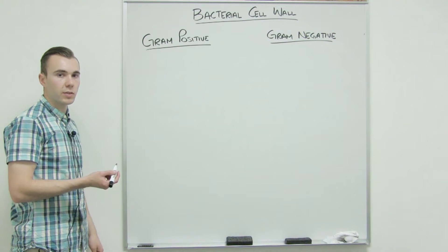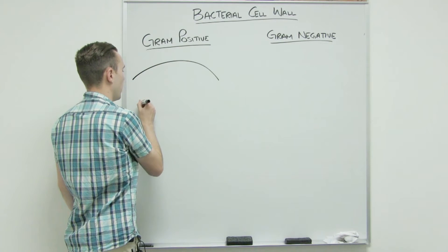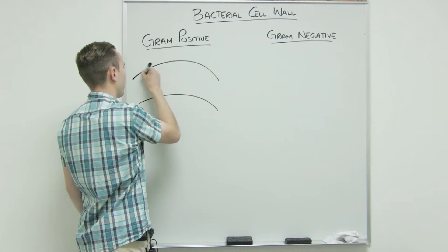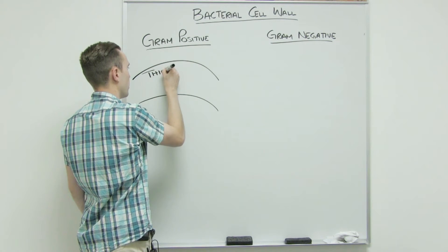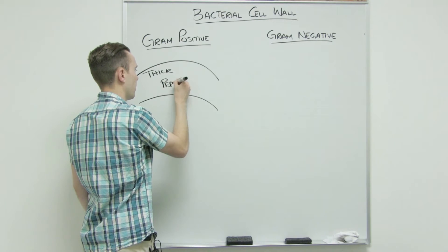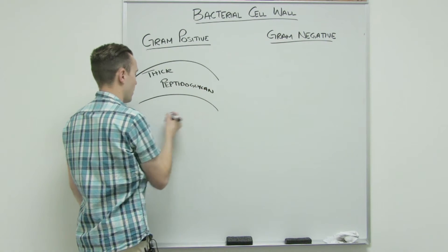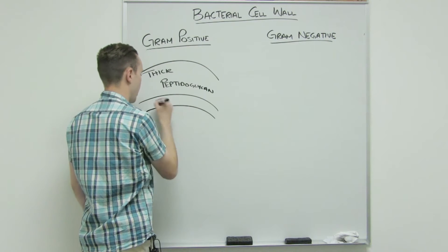The gram-positive cell wall has a thick layer of peptidoglycan, or in other words, there are going to be many layers of peptidoglycan. And it has an inner membrane.